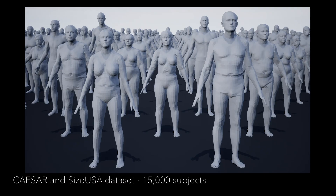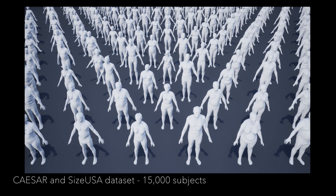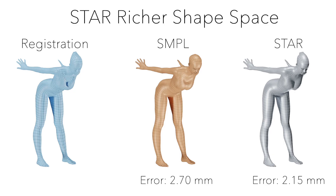To represent the wide variety of human body shapes, we learn a low dimensional shape space using a database of about 15,000 human body scans from the Caesar and SizeUSA datasets. Because we use more body shapes for training than previous body models, STAR captures more variability in the population.